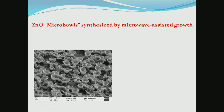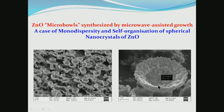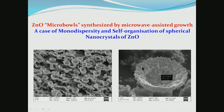Zinc oxide nano bowls synthesized by a catalyst-assisted growth process are shown. Each nano bowl is made of spherical nano crystals of ZnO through a process called oriented aggregation, forming micro-bowls through self-organization. This illustrates that electron microscopy is very important in describing shape, size, and phase in crystalline materials on the nanoscale.